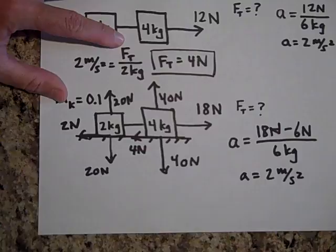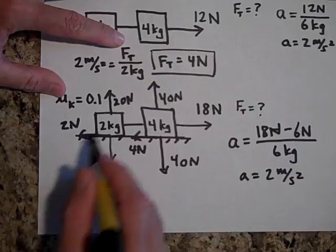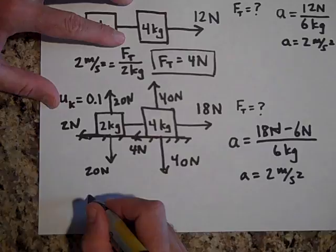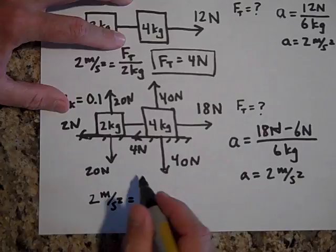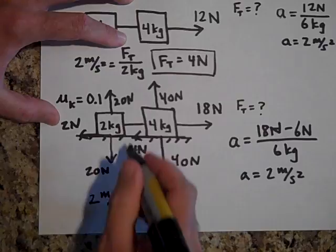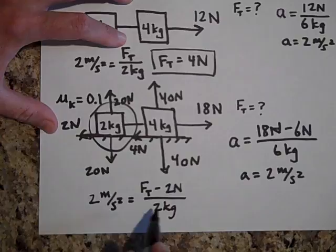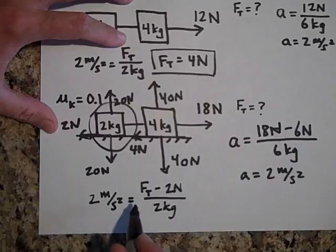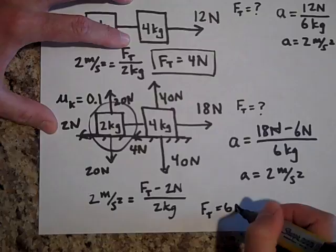Now let's find the tension. We'll tunnel-vision on just the 2-kilogram block. Be careful here: a = (Ft − 2 N) / 2 kg, because the tension pulls it forward but there's a 2-newton friction force the other way. Two times 2 m/s² gives us 4, so the force of tension is 6 newtons.